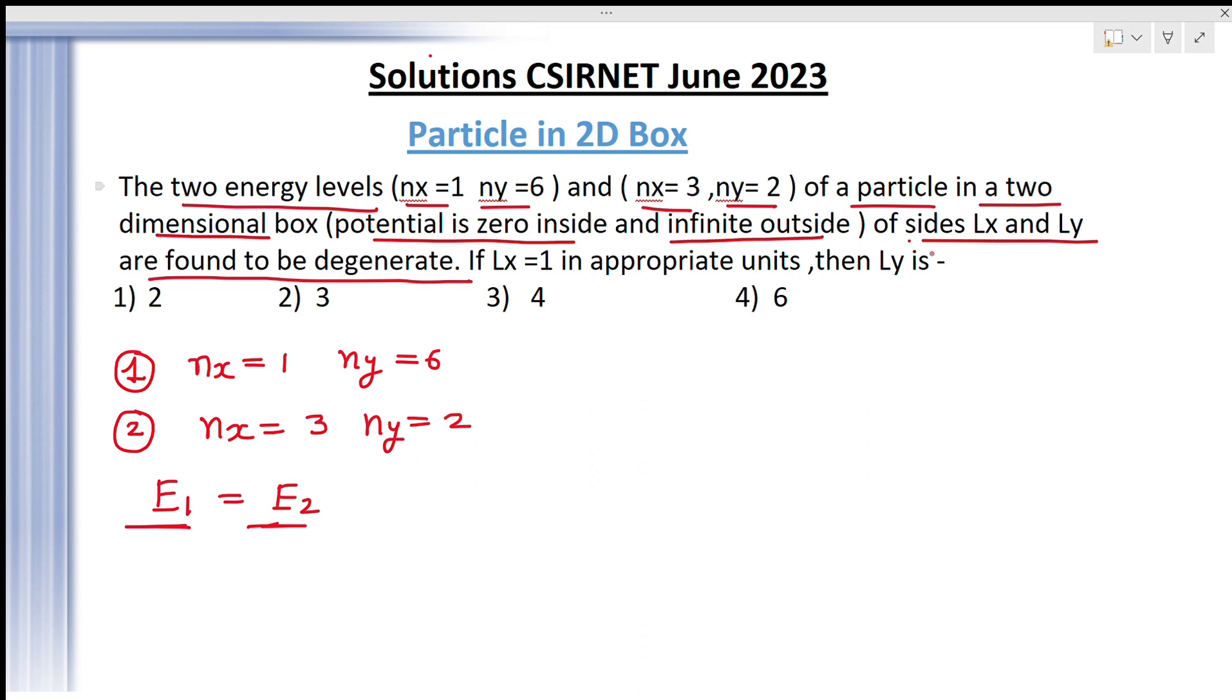And the sides are LX and LY. You have given LX is equal to 1. It means LX is 1. Then you have to find out LY. What is LY? The question is quite simple. You can do if you know the formula of the particle in 2D box.